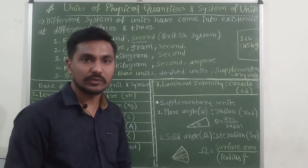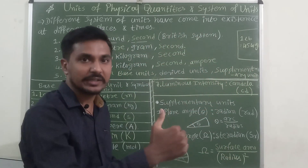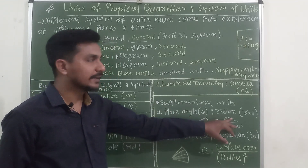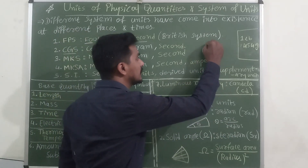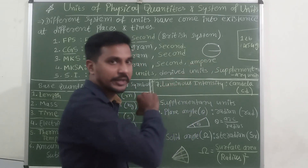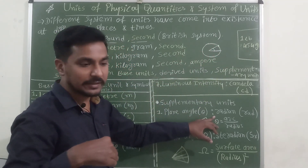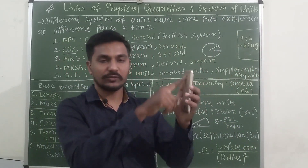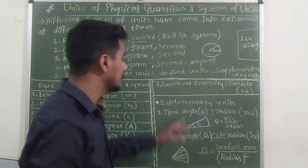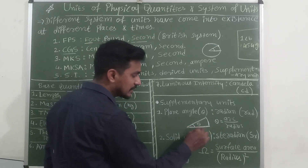Luminous intensity means the light from a bulb or source falling on a particular surface area — power per unit area is the measure of intensity. Now, supplementary units: we have plane angle. A plane angle is formed in a circle — with a radius and a point — and is defined as arc divided by radius. You have already studied this in lower classes.